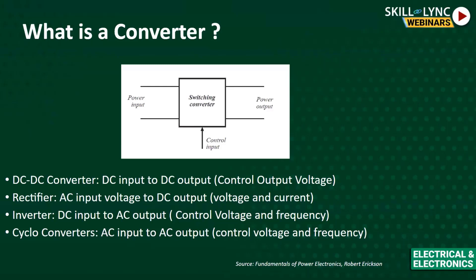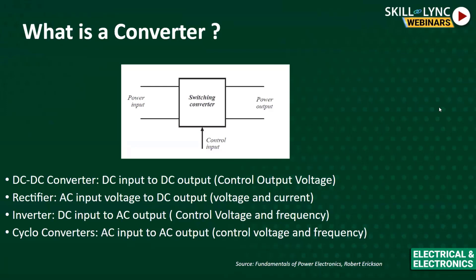The rectifier takes an AC input voltage and gives a DC output. In switching rectifiers, the purpose is to control and shape the line current to be in phase with the line voltage. The inverter, used in powertrains of electric vehicles and motor drives, provides a controlled AC output voltage with controllable frequency. The cycloconverter takes AC input and gives AC output with both voltage and frequency controllable. These are the four basic types of switching converters.